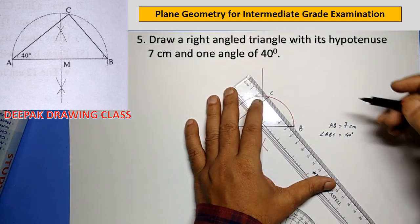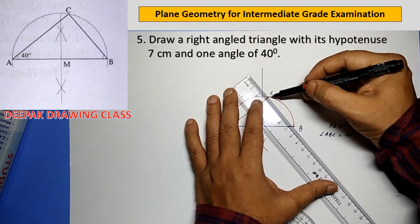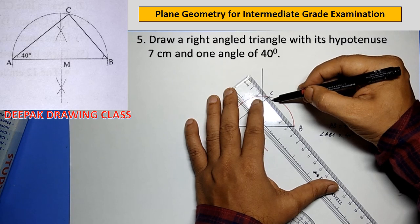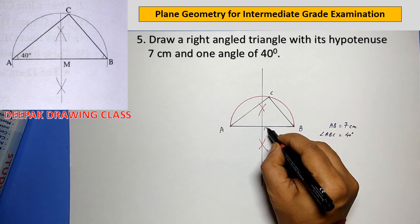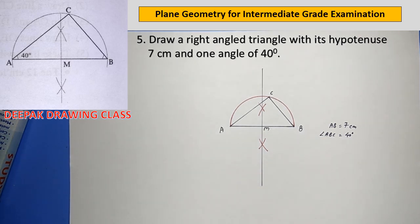Therefore, triangle ABC is the required right-angled triangle. That is, angle ACB is an angle in a semicircle. The construction is done.